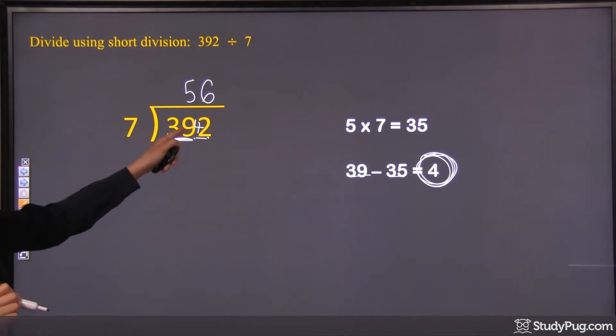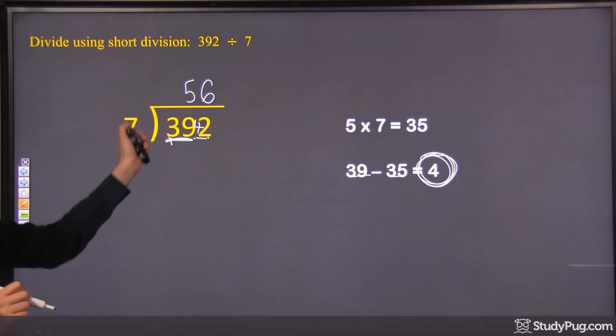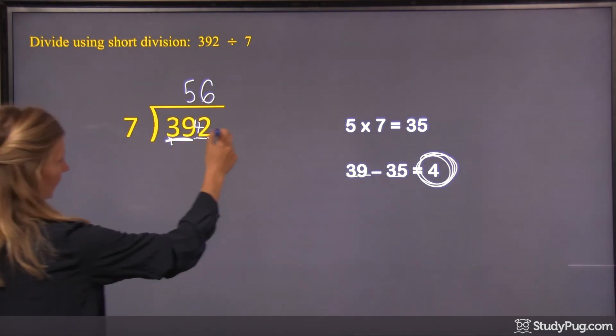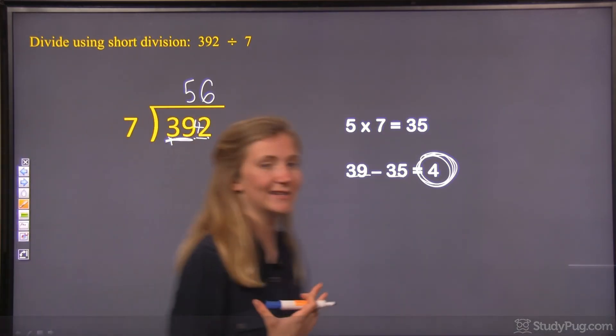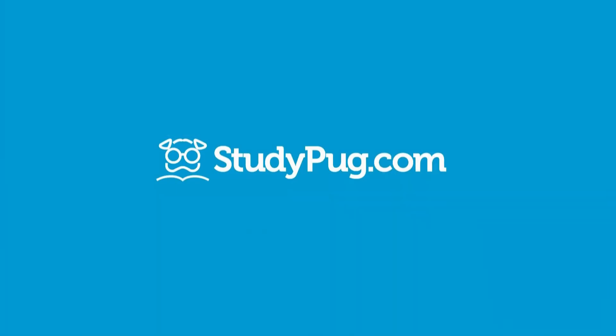And at the end, well, we put 7 goes in evenly into 42, so we're all done here. There's also no place values left to use. Alright, 392 divided by 7 is 56.